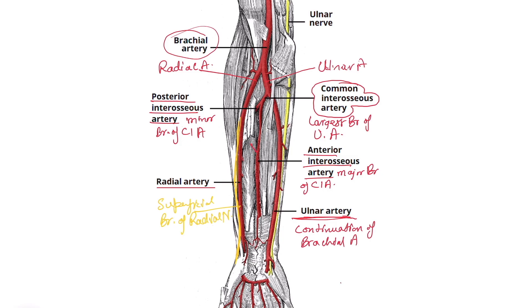The anterior interosseous artery also provides nutritional branches to both bones — one to radius and one to ulna. The nutritional arteries are directed proximally to both bones because the growing end of radius and ulna is the distal end. With so much to supply — blood and nutrition to both radius and ulna, the bulk of muscles in the front of forearm, and even reaching the back of forearm — the anterior interosseous artery is the continuation of the common interosseous artery.